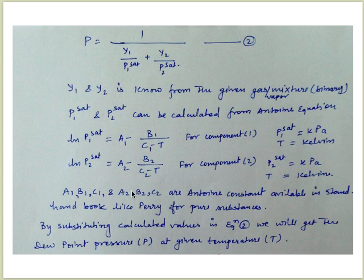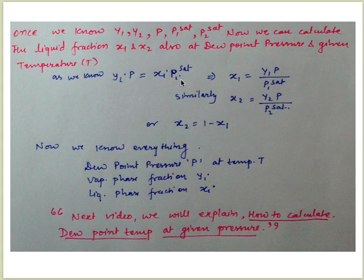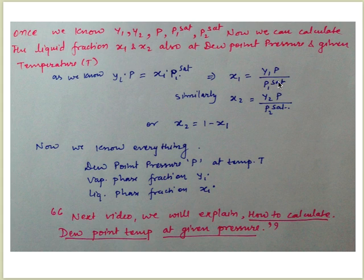By substituting y1, y2, P1_sat, and P2_sat into the dew point pressure equation, you can get the dew point pressure P at a given temperature T. Once P is known, we can calculate the liquid phase composition at the dew point using: x1 = y1 × P / P1_sat and x2 = y2 × P / P2_sat, or x2 = 1 − x1. Since we know y1, P, P1_sat, and P2_sat, we can get both x1 and x2.